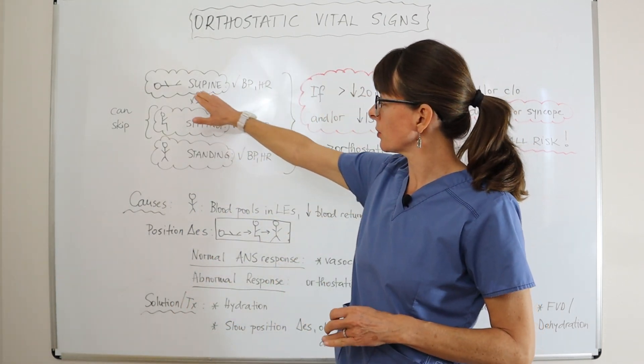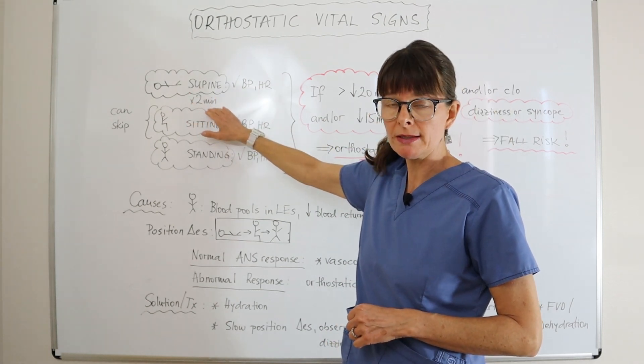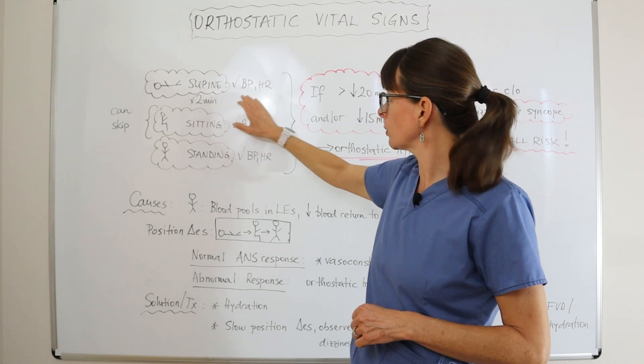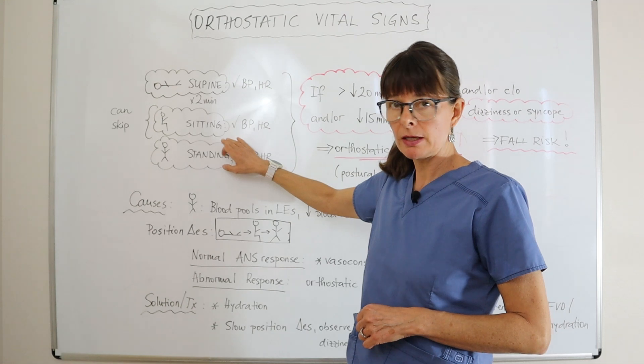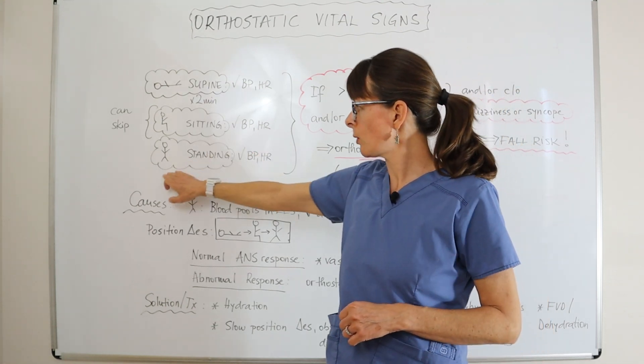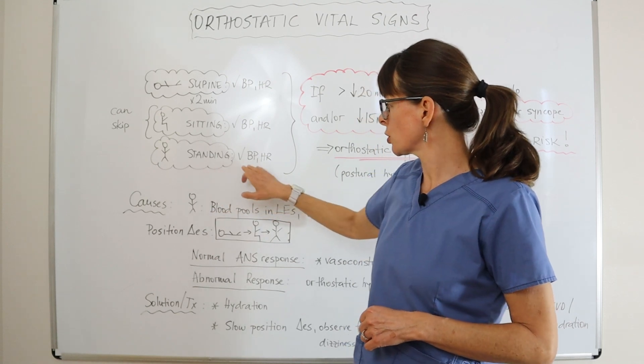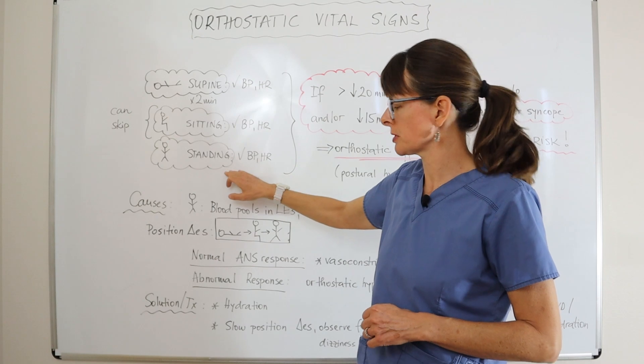We start with the patient supine for at least two minutes, and while they are laying down, we check their blood pressure and heart rate. Then we'll have them sit up slowly, check their blood pressure and heart rate again, and then have them stand up and check the blood pressure and heart rate in all three different positions.